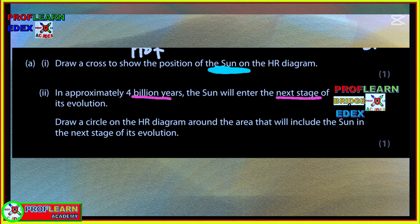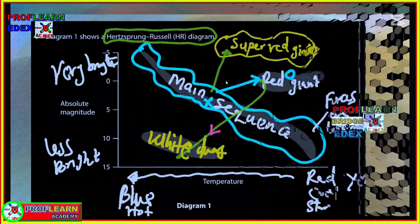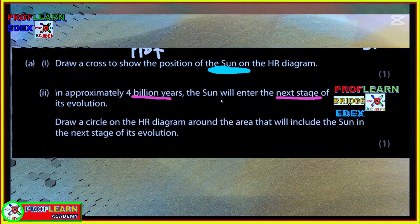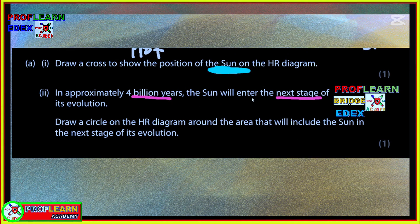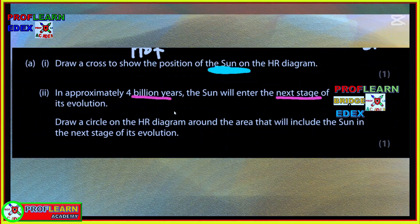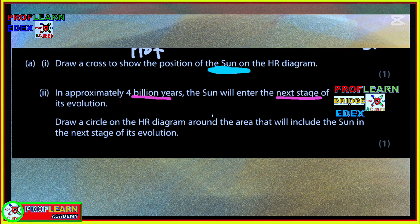Let's see the question that was asked. Draw a cross to show the position of the sun. The position of the sun was actually basically somewhere here in the main sequence. The next question: in approximately 4 billion years, the sun will enter next stage of evolution. Remember the sun is a low mass star. If it's a low mass star, it means it will move to the red giant stage, it will move to this region here. Next, draw a circle where the sun will go after that evolution. If you have not subscribed, subscribe so that when I'm going to upload the second part of this, you'll be notified.